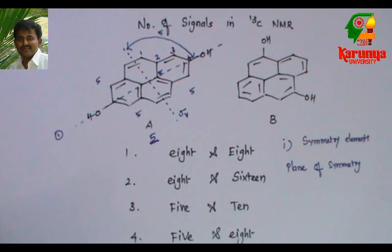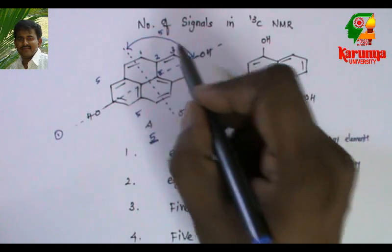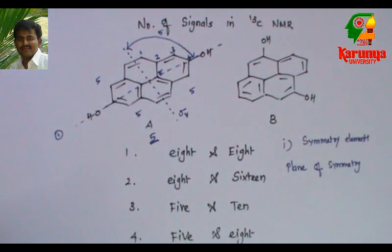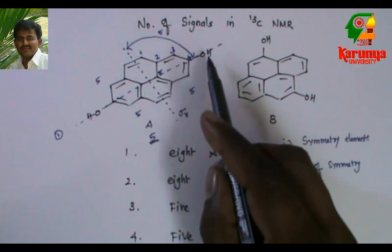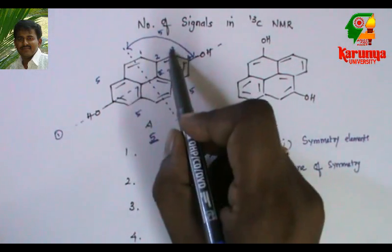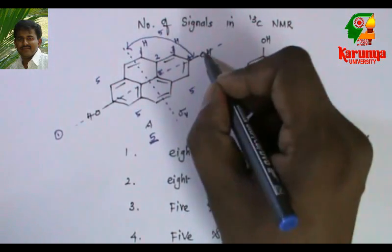What are the number of signals in proton NMR? It will be one, two, and three. Sometimes the phenolic proton may not appear in the proton NMR. Considering that it gives signal in the proton NMR, the number of signals will be one, two, and three. There are only three hydrogens in one.